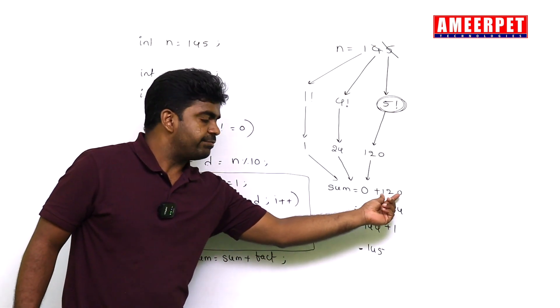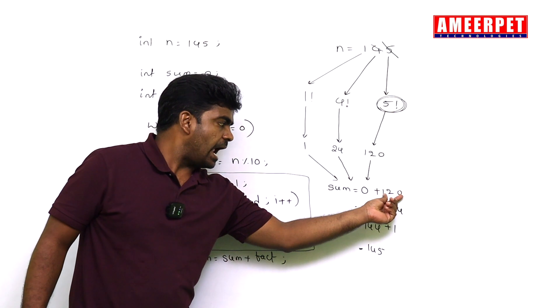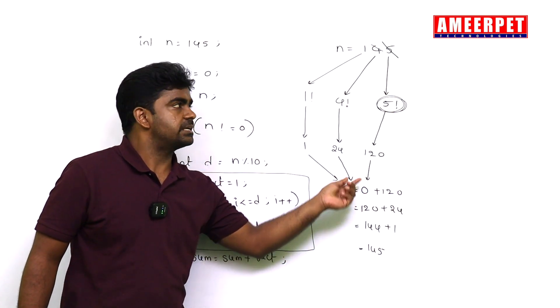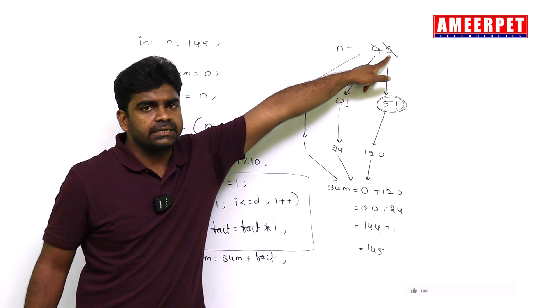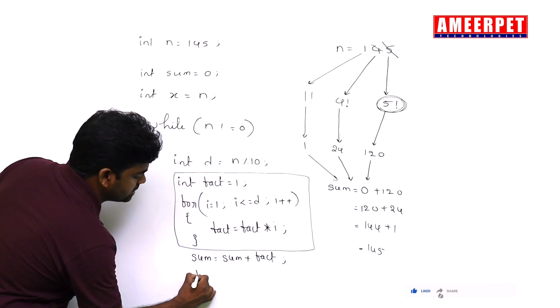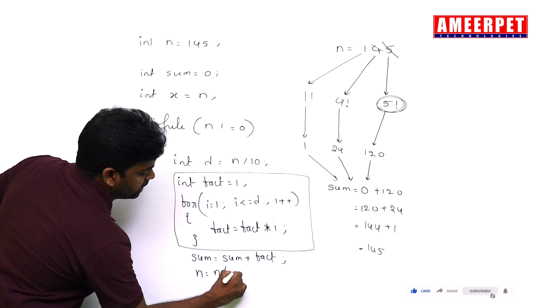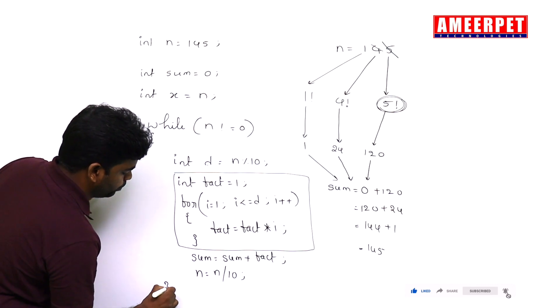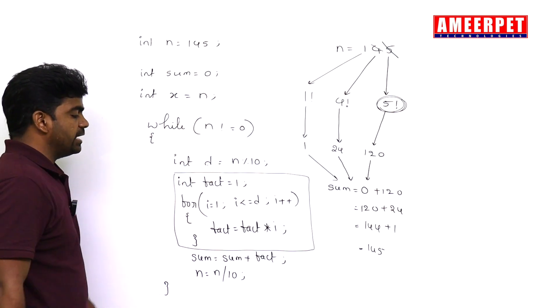After finding the factorial, we are adding to the sum. After adding to the sum, no need to work with this digit. Just remove that digit: n equal to n by 10. This loop will repeat until n value becomes zero.